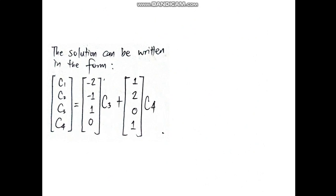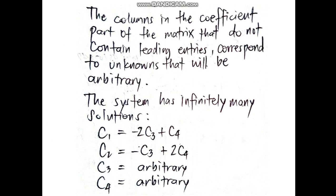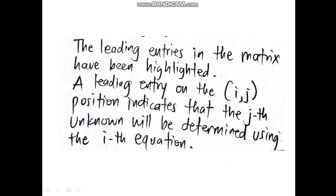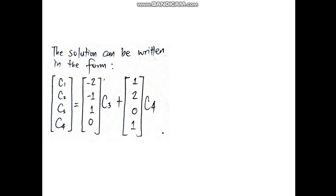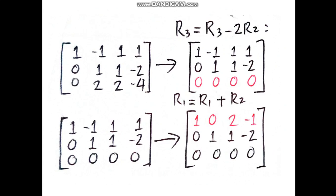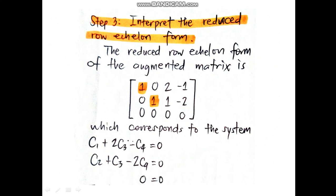c2, c3, c4 equals the vector (-2, -1, 1, 0) times c3 plus the vector (1, 2, 0, 1) times c4. The negative 2, negative 1 comes from negative 2c3 and negative c3. The 1, 0 comes from the first column of the matrix. Meanwhile, the next vector 1, 2, 0, 1 comes from positive c4 and positive 2c4. The 0, 1 comes from the second column of the augmented matrix.